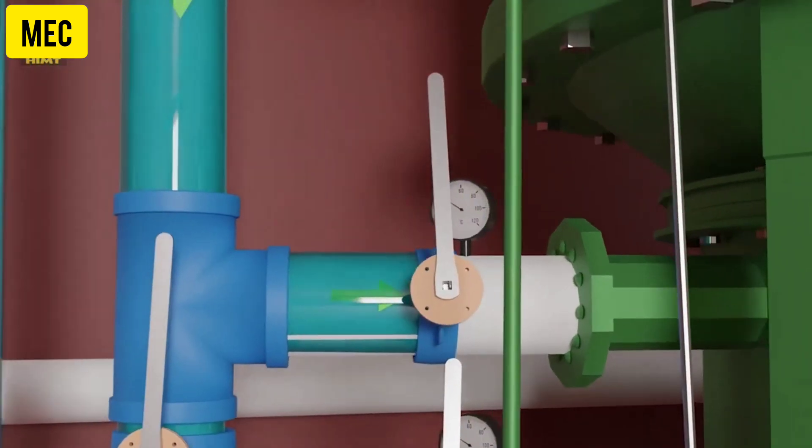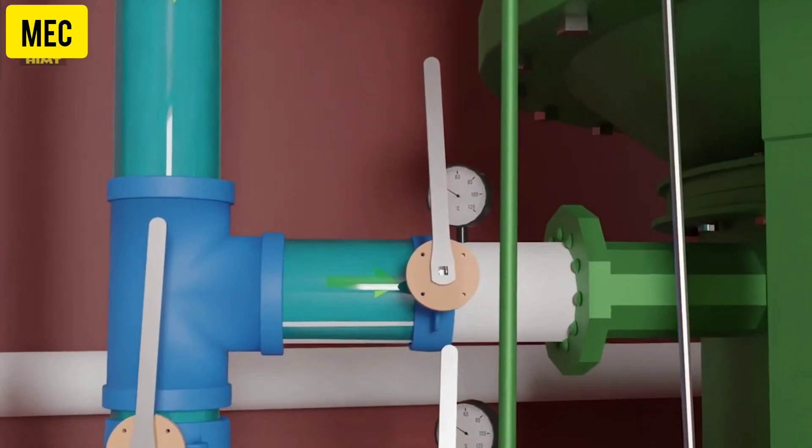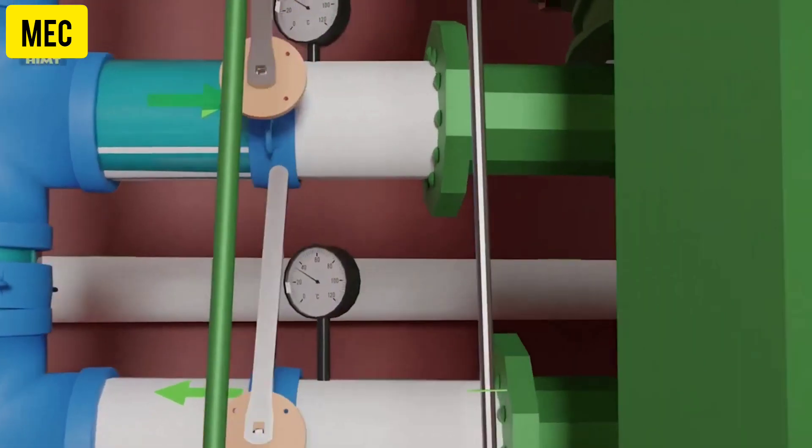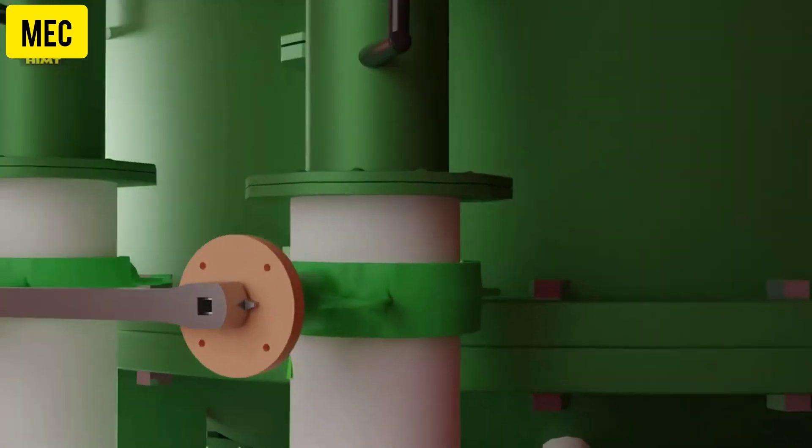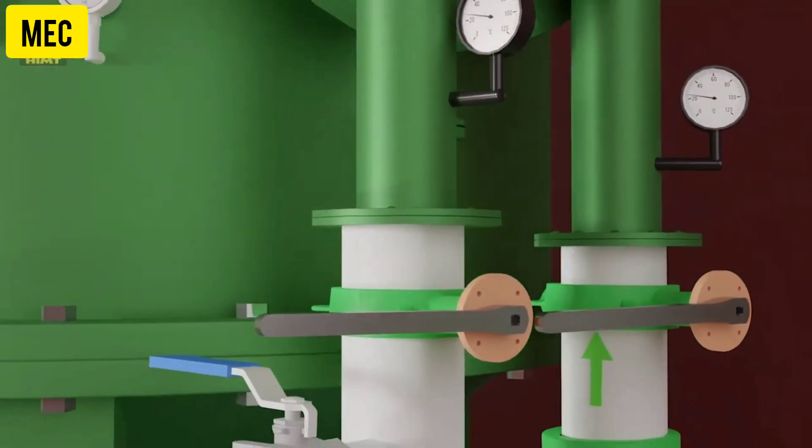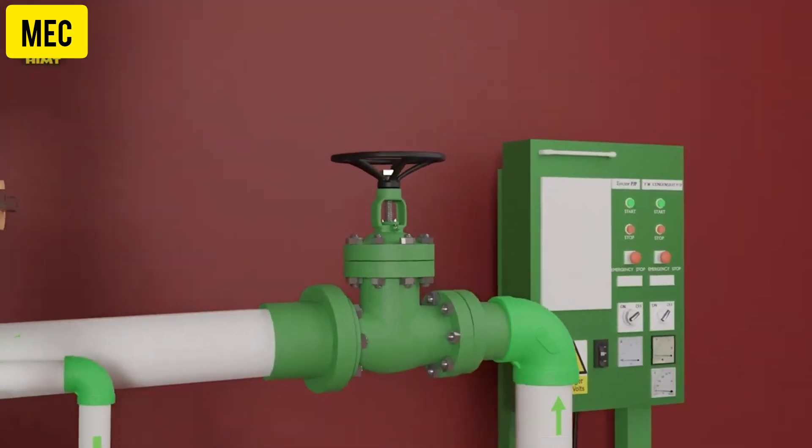This is the hot jacket water inlet to the evaporator, which is a crucial part of the distillation process, and this is the jacket water outlet where the cooled water exits the evaporator after the heat exchange process. This is the cooling water inlet—it is the entry point for the cooling water that circulates through the condenser. This is the cooling water outlet where the cooled water exits the condenser, having absorbed heat from the vapor and facilitated its condensation.